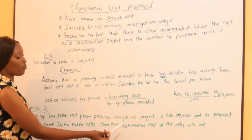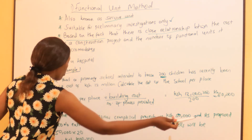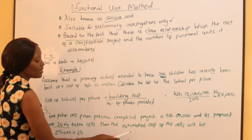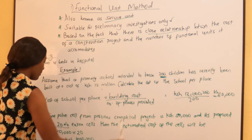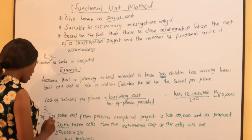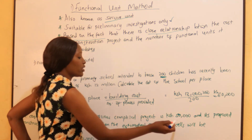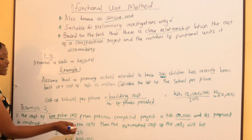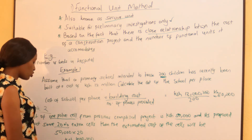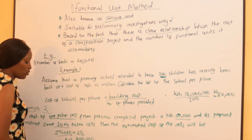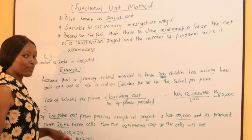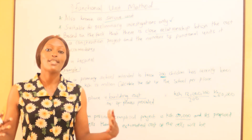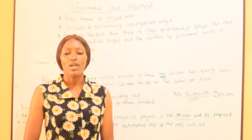Example two: the cost of one police cell from a previous completed project is 50,000, and it is proposed to construct 20 additional cells. The estimated cost of the cells will be: cost of one cell multiplied by 20 cells equals 1 million. I hope that is clear. The functional unit method is the first and simplest method of approximate estimation.